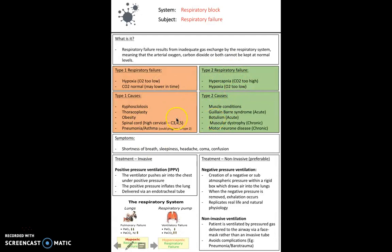So different causes of these. Type 1 is usually caused by obesity, spinal cord problems, pneumonia, asthma. It should never progress to type 2, but occasionally we can do. Type 2 causes some of these muscle conditions such as GBS, botulism, food poisoning disorders, muscular dystrophy, neuromuscular disease, things that are going to impact on the CO2 level and the respiratory failure. So patients will present with shortness of breath, sleepiness, headache, coma, and confusion. So these are typical presenting signs of someone who's got hypercapnia, too much CO2, so sleepiness, headache, coma, and confusion. And usually, treatment comes down to ventilation, but it's really important to understand the difference between invasive and non-invasive ventilation and how we prefer to do non-invasive ventilation because there's less long-term complications.